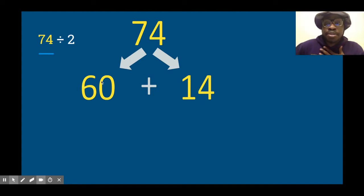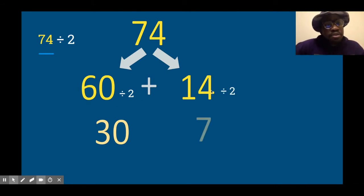I chose 60 because I personally know what 60 divided by 2 is, and then I have 14 left over, which is also divisible by 2. So 60 divided by 2 - something times 2 equals 60, that's 30. And then 14 divided by 2, that's easy, I know that's 7. So 30 and 7 together make 37. 74 divided by 2 is 37.